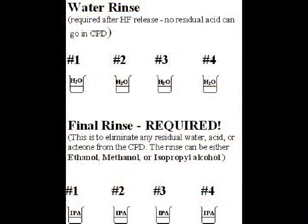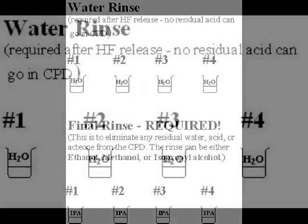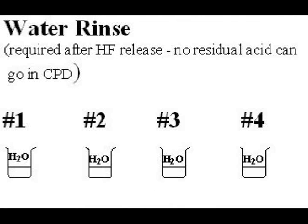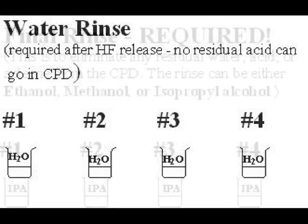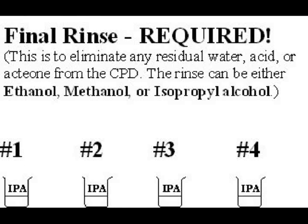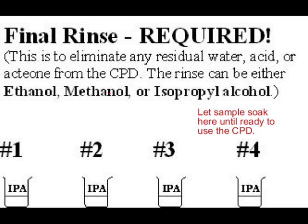The next step is preparing the samples with the following rinse steps. If a sample has been exposed to HF, it needs to be rinsed for several minutes in three to four different water baths. Each bath will remove any remaining residual HF. The sample then goes to the final rinse step before using the CPD. This last step eliminates any water from the sample. Rinse the sample for several minutes in three to four different solvent baths. The solvents allowed for this last step are ethanol, methanol, or isopropyl alcohol. If the samples have not been exposed to HF, they can skip the water rinse and go right to the final rinse. Leave the samples soaking in the last final rinse bath until ready to be placed in the CPD. Exposure to air should be minimized.